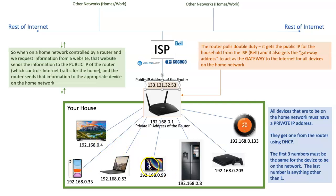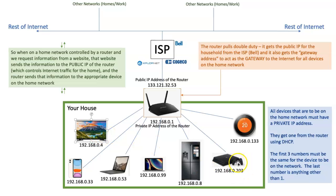Only devices on the network can determine your private IP address. That's important because you might want your PS4 to talk to your smart TV — maybe you want to wirelessly stream from your PS4 to the TV. That's easy because all the information from one device goes to the router and the router passes it right back. So devices inside the network can talk to each other pretty freely, whereas everything outside the network, the rest of the internet — it has to go through the router.